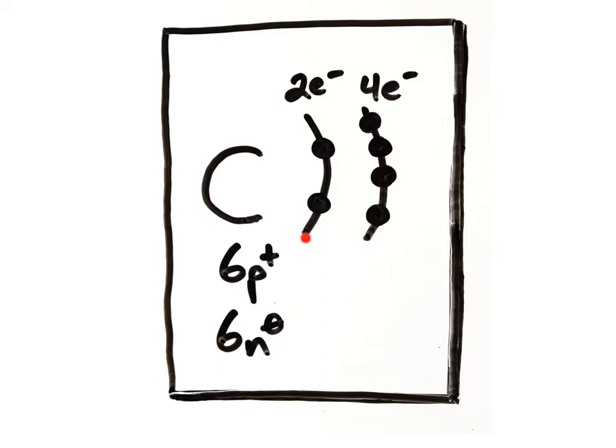Each electron shell can hold a specific number of electrons. Here in carbon, the first shell is holding two, and the second shell is holding four electrons.